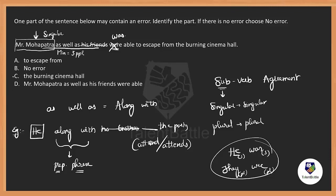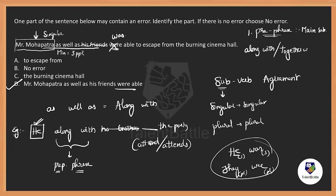So yes, there is an error and the error is in option D. I hope everything discussed here is clear. There are many things to note. First is the prepositional phrase rule: whenever we have a prepositional phrase, we only take the main subject or the first subject — we don't consider extra information. 'His friends' is extra information; my main focus is completely on Mohapatra. Whenever we have words like 'along with', 'together with', 'in addition to', and 'as well as', we consider only the main subject. This is called the prepositional phrase rule.